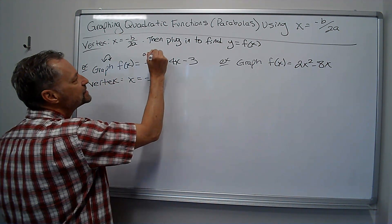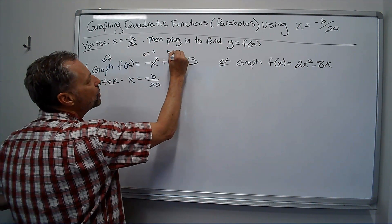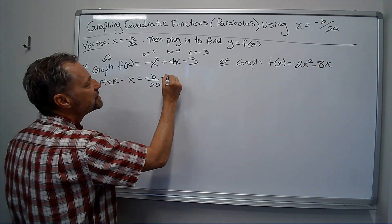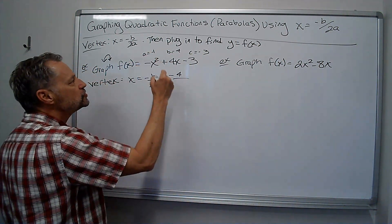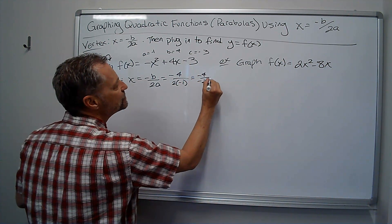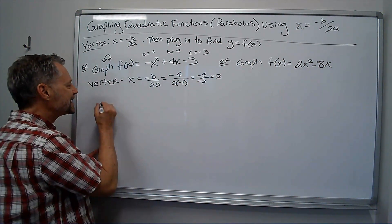Notice that a is negative 1, b is 4, c is negative 3. And I just plug in, it's negative b. So negative 4 over 2 times negative 1. So negative 4 over negative 2. The x value is just 2. So I plug that in.